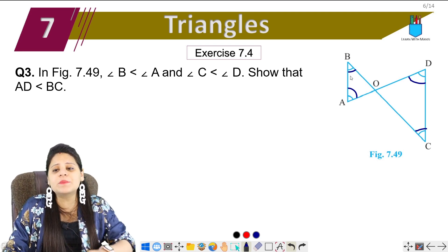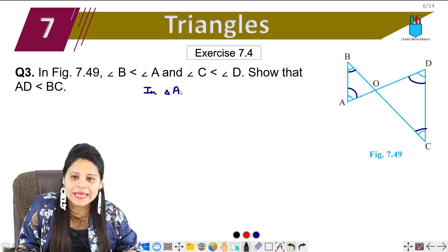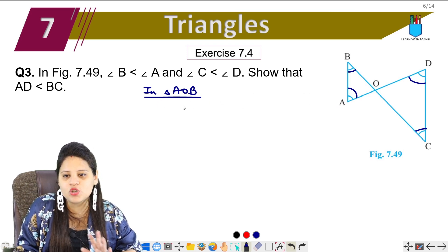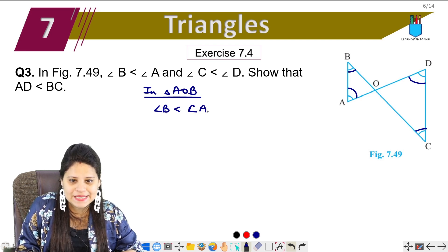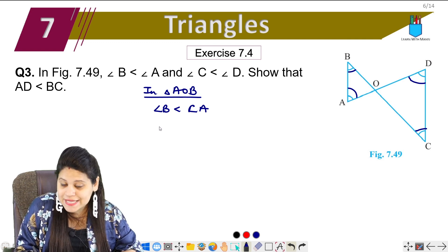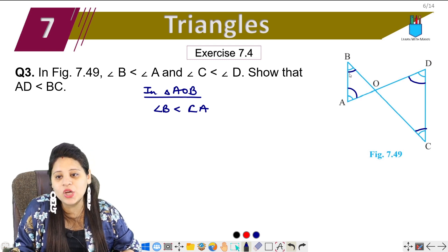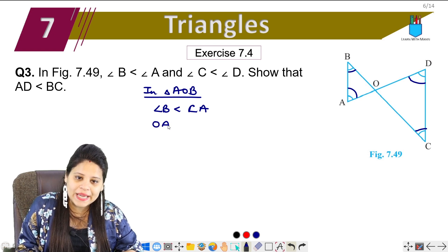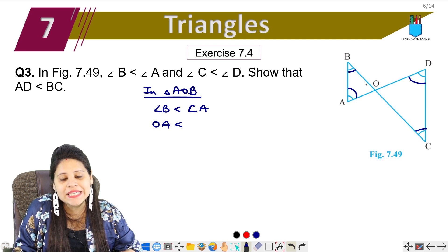What will we do in this? First, the simple thing we have given in triangle AOB. If I talk about triangle AOB, then if angle B is smaller than A, that means angle B the opposite side will be smaller than A. So angle B's opposite side is OA. It means OA is smaller than A. Now angle A's opposite side is OB.